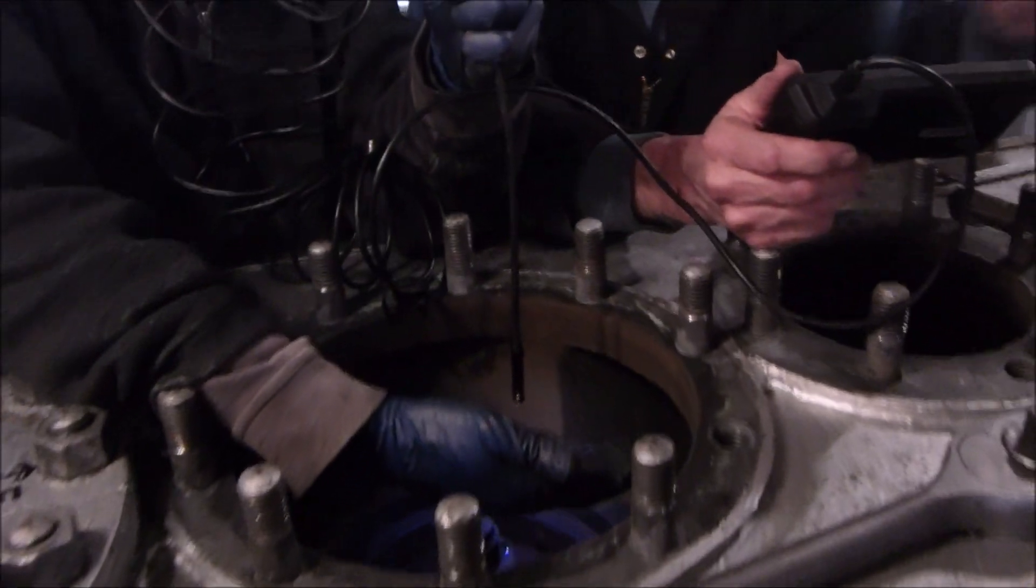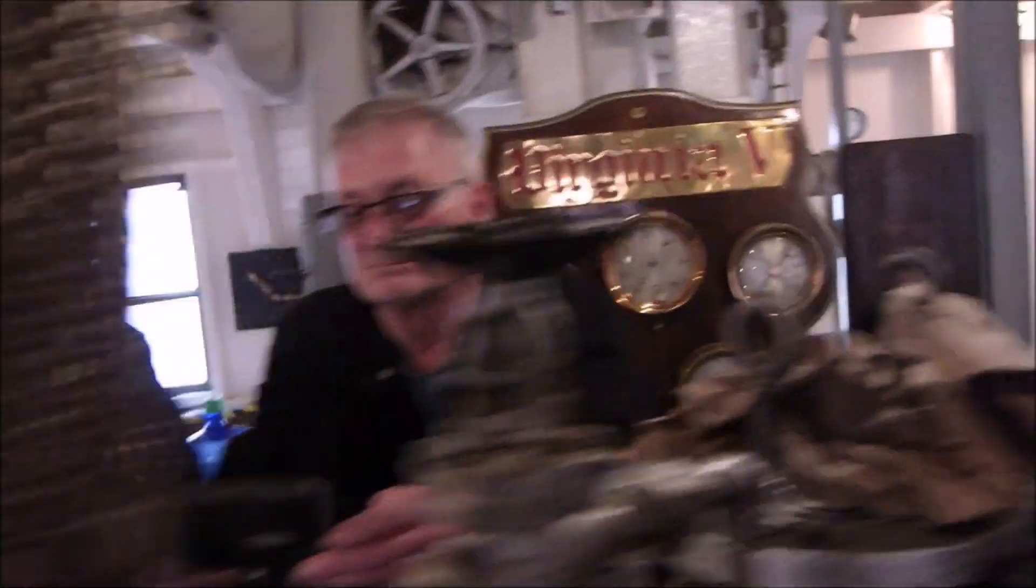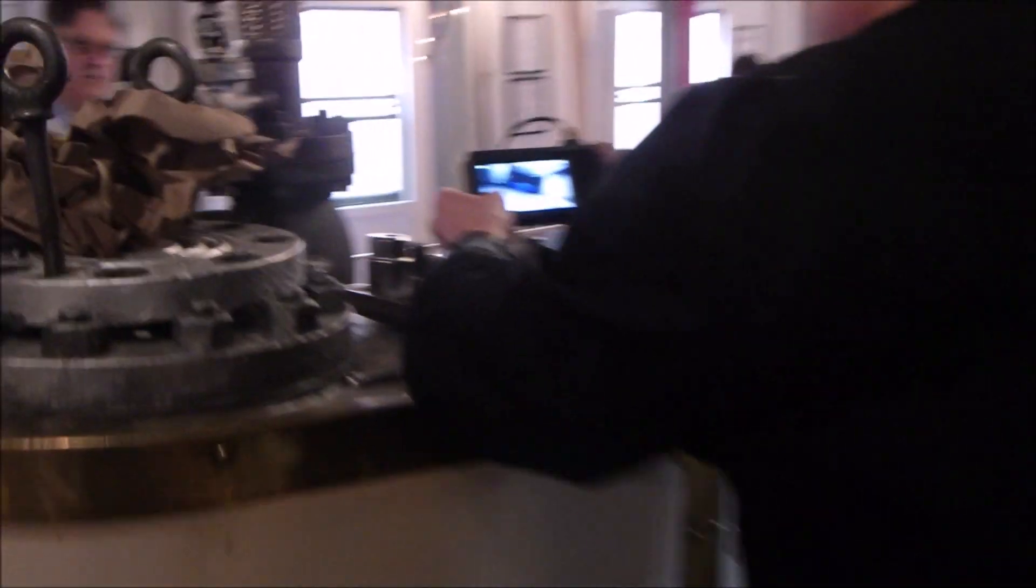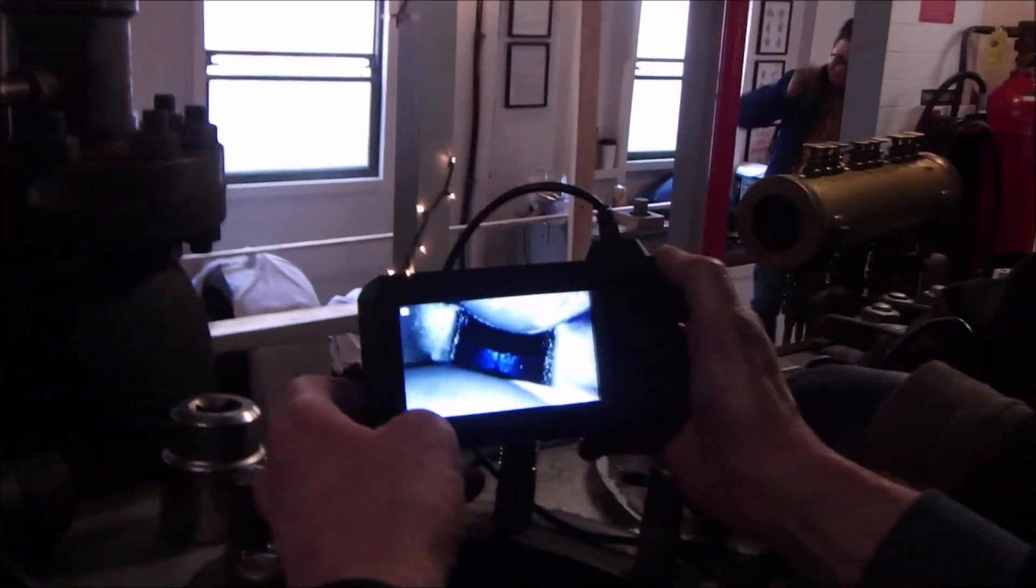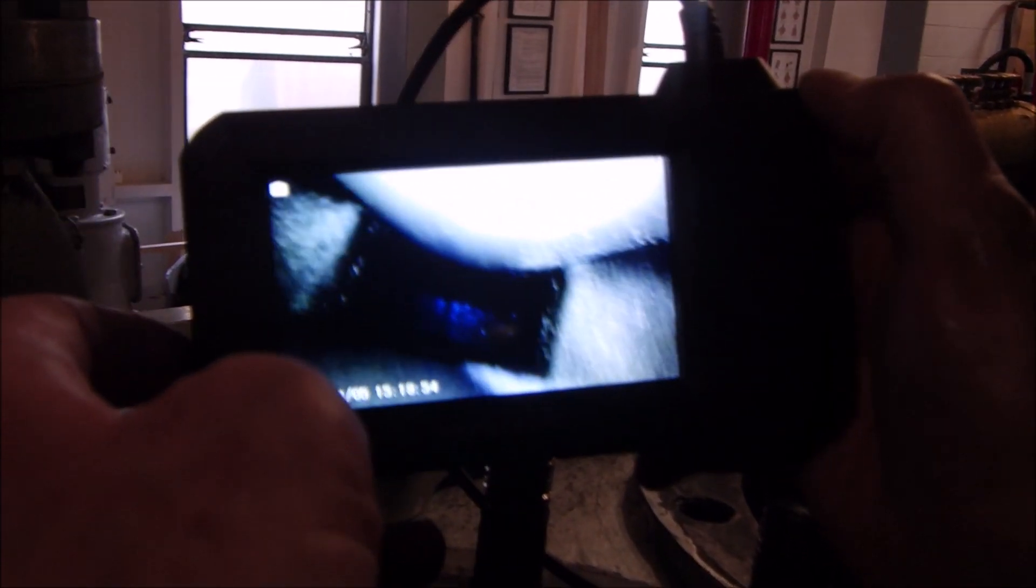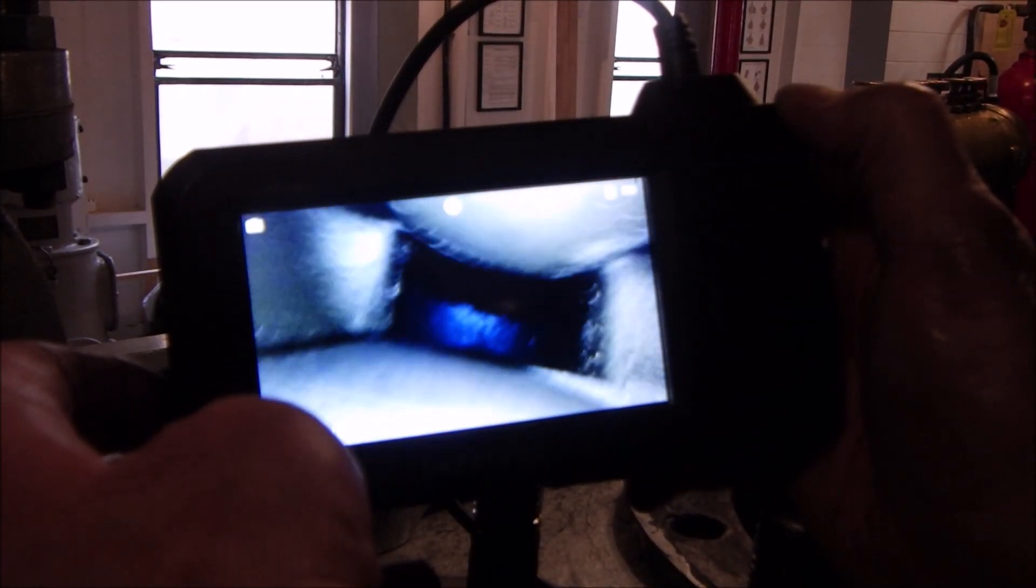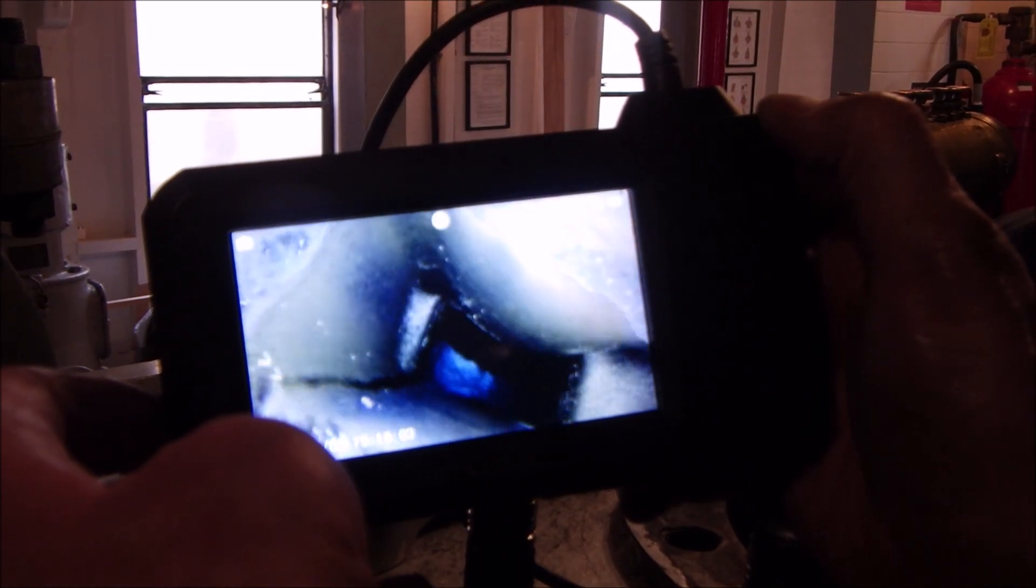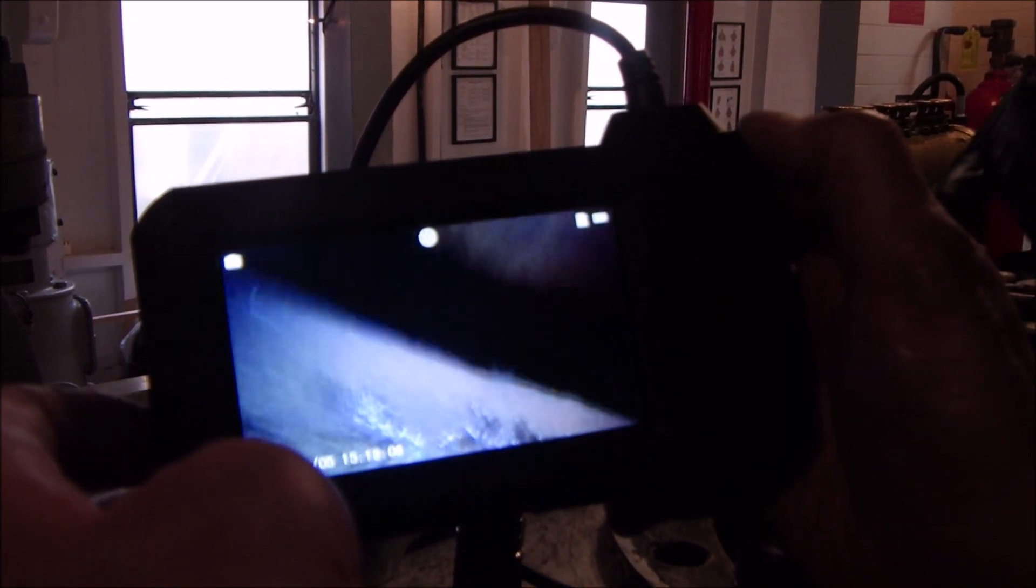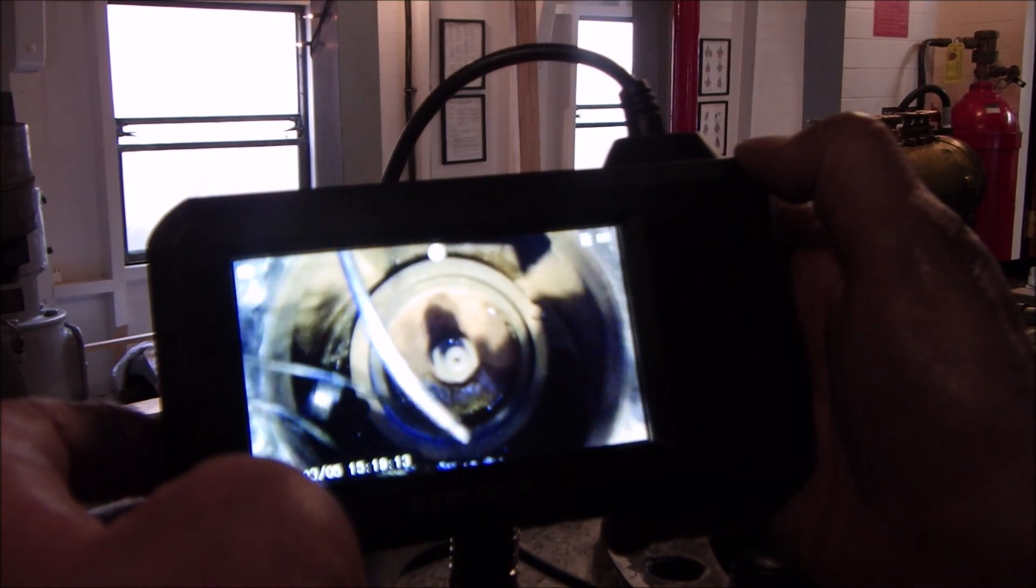And one of our final tests is going to be running a boroscope down in here to get a look inside the valve channels and make sure there's no debris blocking them. So we're looking into the intermediate pressure valve cavity. Can you zoom out and look at the top of the piston just to kind of get a perspective of where we're at.